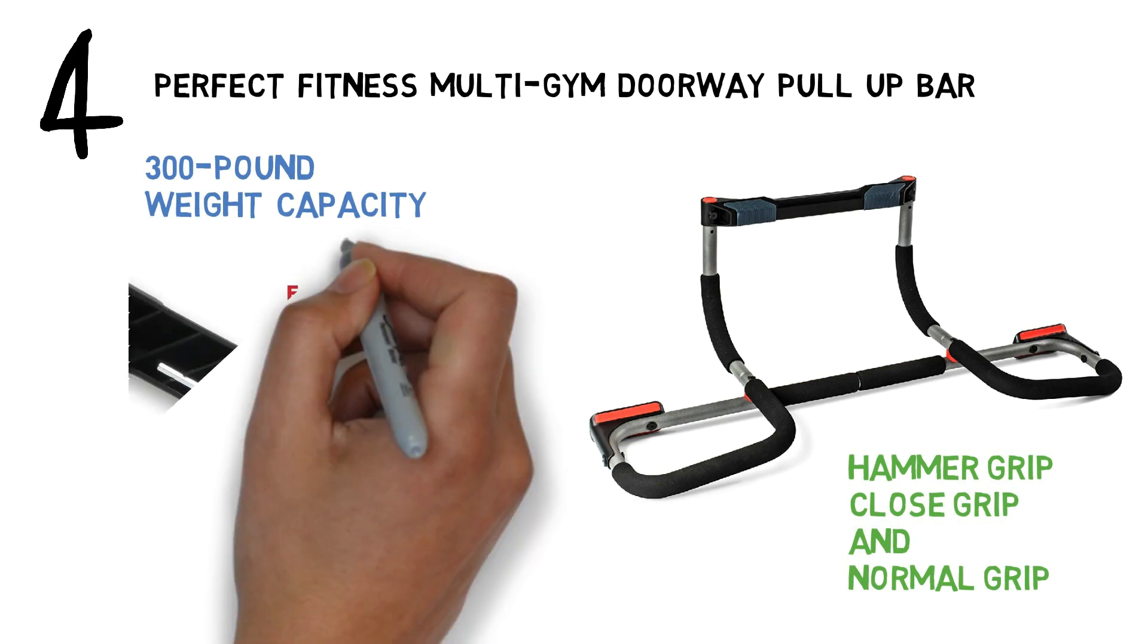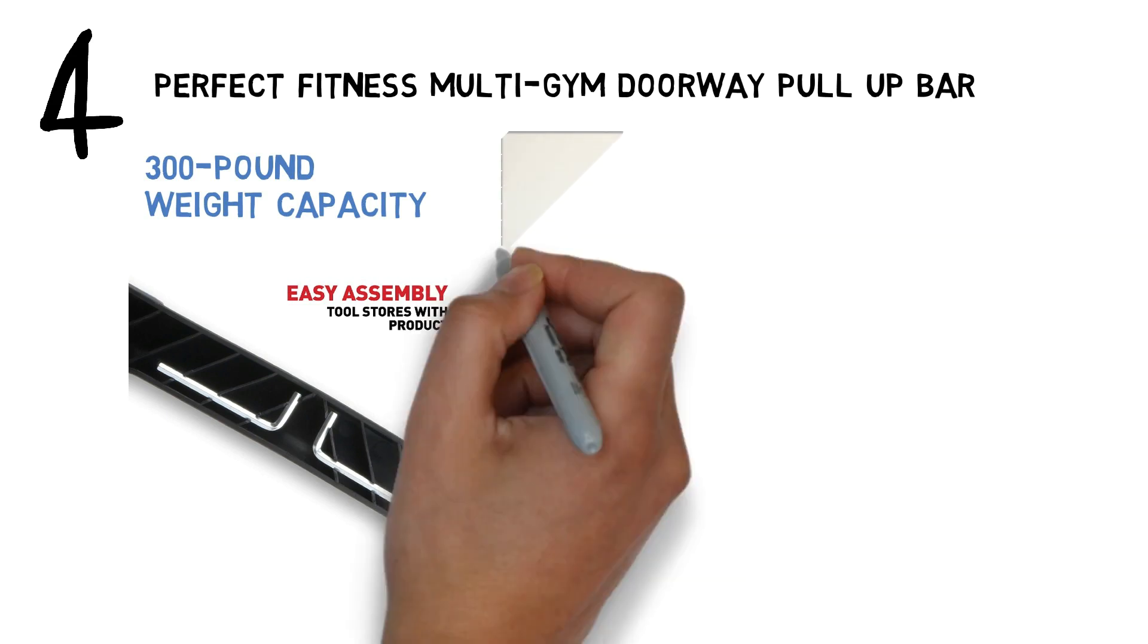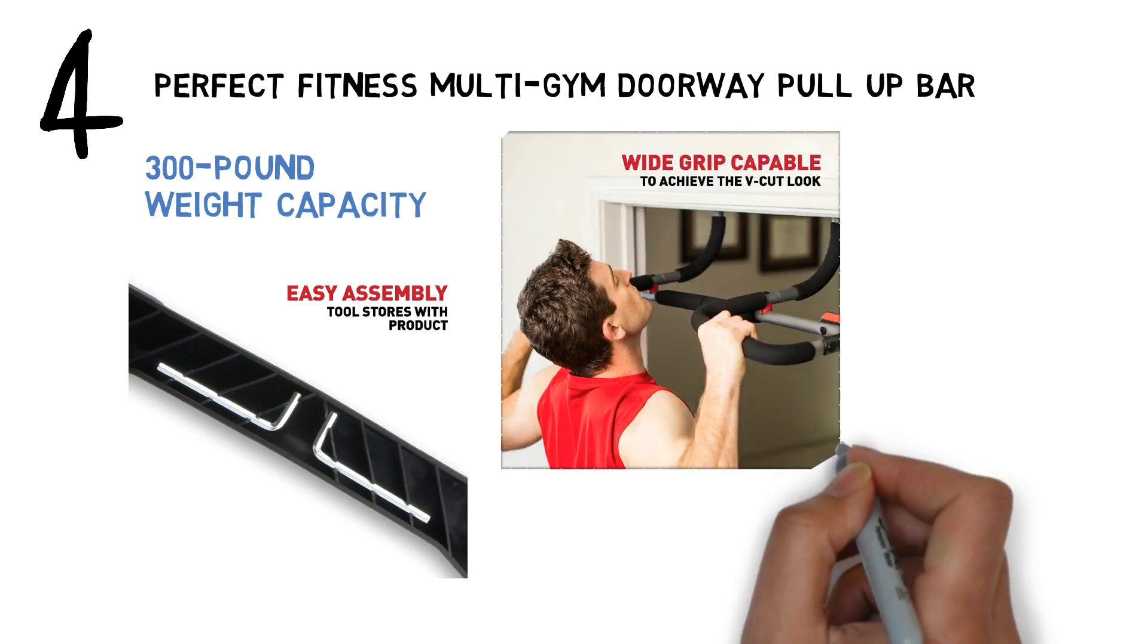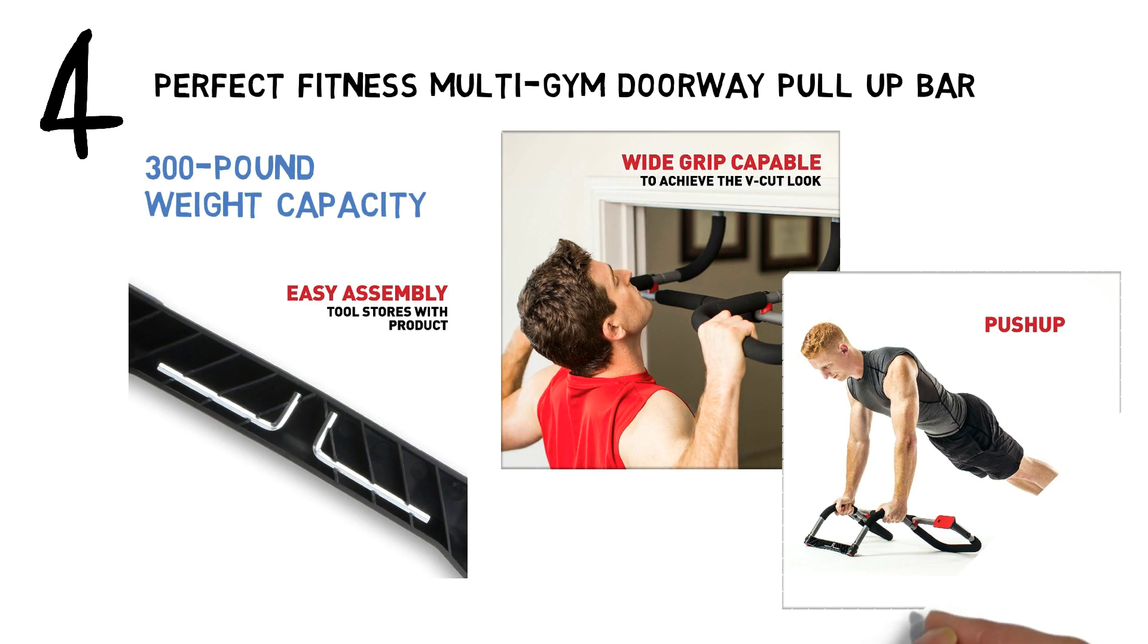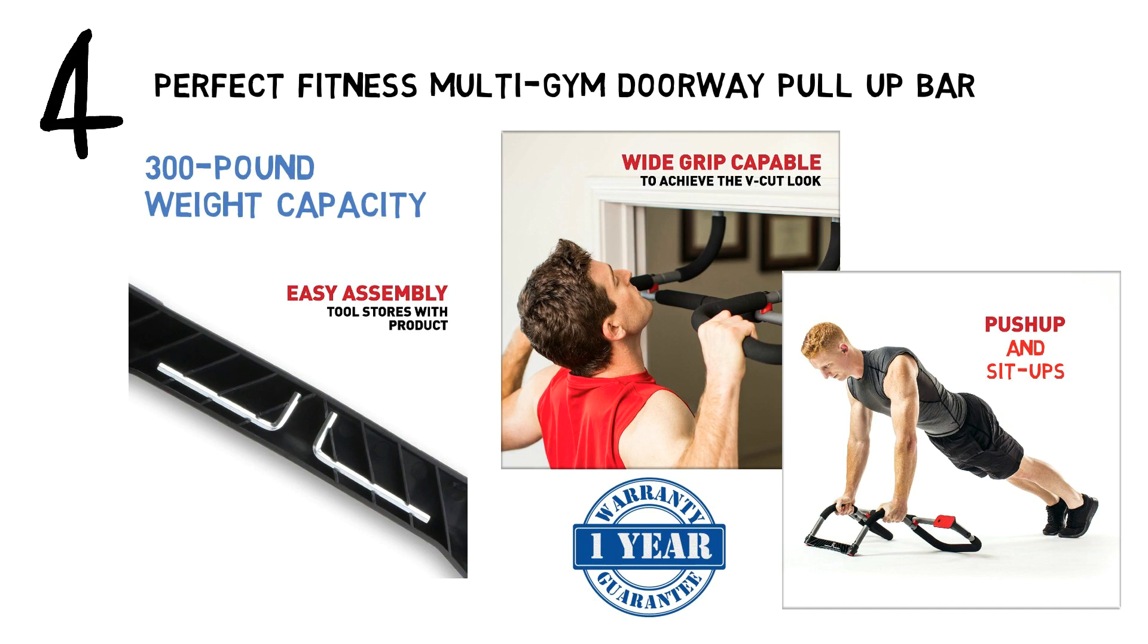There is some assembly required and all the tools needed are included with the bar. The Multi-Gym Pro adjusts for height and works with door frames that are up to 6 inches deep and 33 inches wide. The bar can be placed on the floor to assist with push-ups and sit-ups. Perfect Fitness stands behind the quality of this model with a one-year warranty.